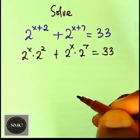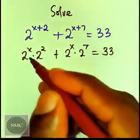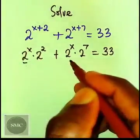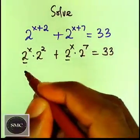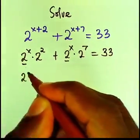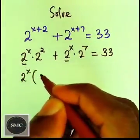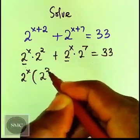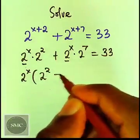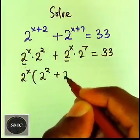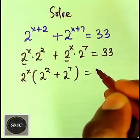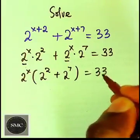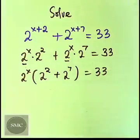The next thing we are going to do — we can see that we have something common here, which is 2 to power x. So I'm going to factorize it out, giving us 2 to power x times the quantity 2 to power 2 plus 2 to power 7, equals to 33.